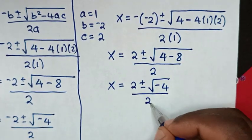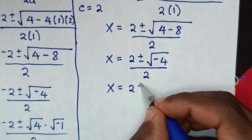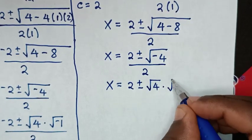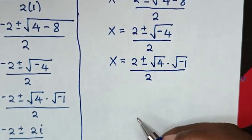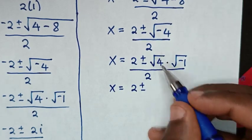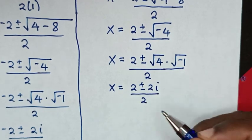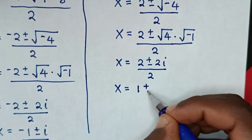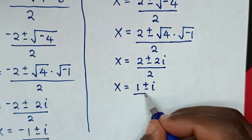Then it will be x equals 2 plus or minus square root of negative 4, which is negative 4 times square root of negative 1, over 2. Then x equals 2 plus or minus square root of 4, which is 2, times square root of negative 1, which is i, over 2. So x equals 2 divided by 2, which is 1, plus or minus 2i divided by 2, which is i. So we also have 2 solutions here.